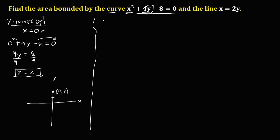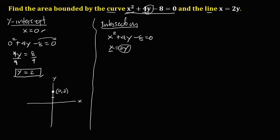Then solve for the intersection. To find the intersection, we need to combine the two equations: x squared plus 4y minus 8 equals 0 for the curve, and x equals 2y for the line. We're going to use the substitution method. Since x equals 2y, substitute 2y for x, so the equation becomes (2y) squared plus 4y minus 8 equals 0.